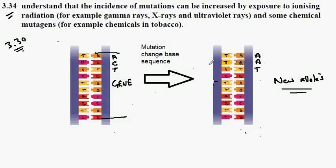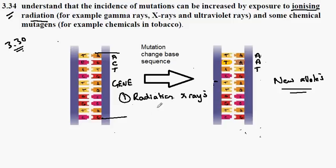The question is: what causes these changes? We want to think of two examples. The first one is based on radiation. As we can see up here, it is named as ionizing radiation, and that would be something like X-rays. Alternatively, it could be sunshine — UVB rays, the ultraviolet rays mentioned here.